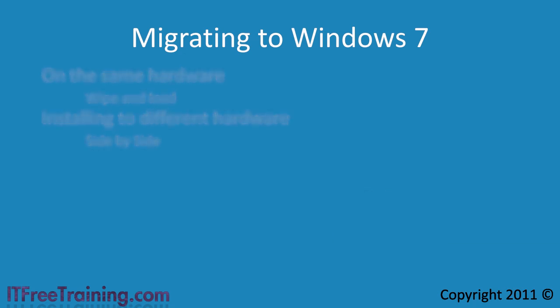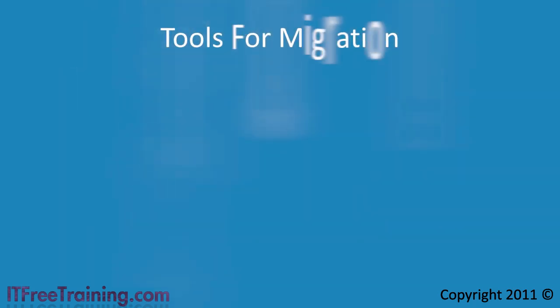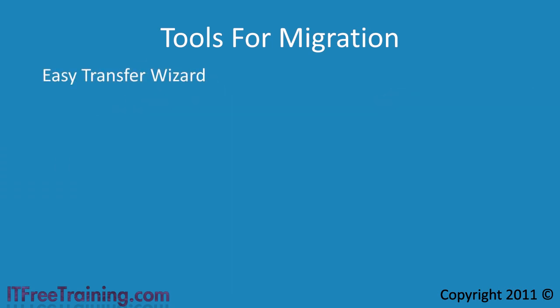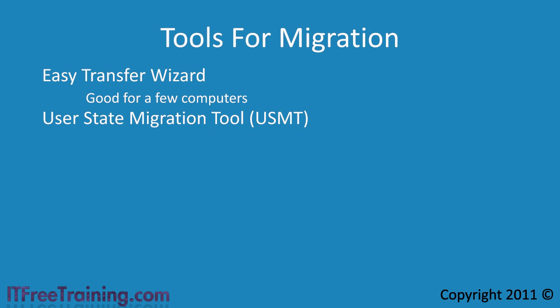To transfer files and settings from one computer to another there are two software tools you can use. The first is the Easy Transfer Wizard. This simple wizard is used when you want a quick solution and only have a few computers to perform migration on. The second is the User State Migration Tool, or USMT. The big difference with this tool is that it is scriptable, making it the better choice when you have a large number of computers, however it is not as simple to use.